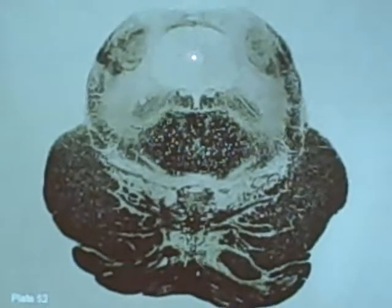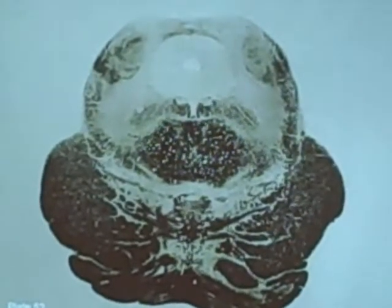Periaqueductal gray. Cerebral aqueduct right here. And so moving out laterally here, same pathways to medial lemniscus. The spinothalamic tract.